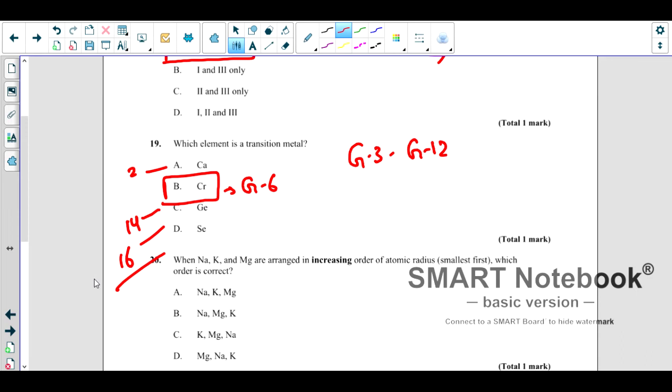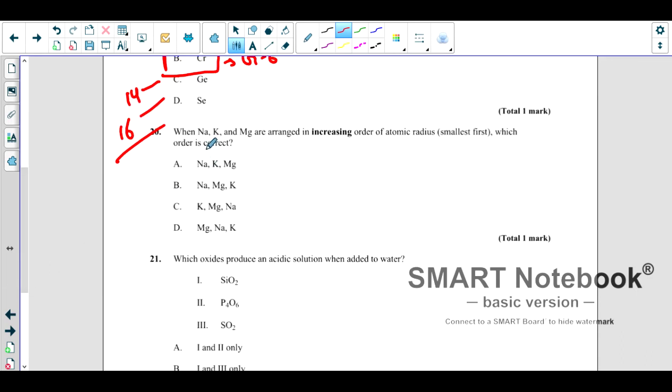When sodium, potassium, and magnesium are arranged in increasing order of atomic radius, smallest first, which order is correct? These three, sodium and magnesium, they are both in same period, they are in period three. If we arrange them going from left to right, the small one will be magnesium because it has more nuclear charge, then it will be sodium. But if you look at potassium, it is in the next group, like it is in the lower the group, so its size will be more than both of them. So the correct order will be magnesium, sodium, and then potassium.